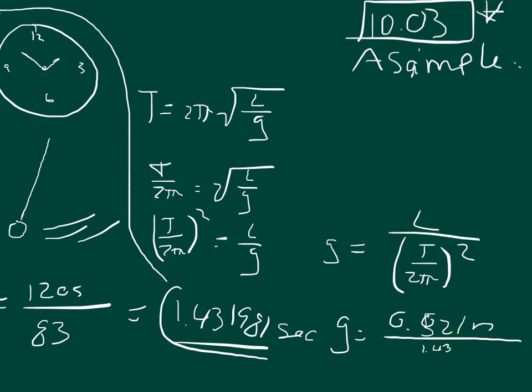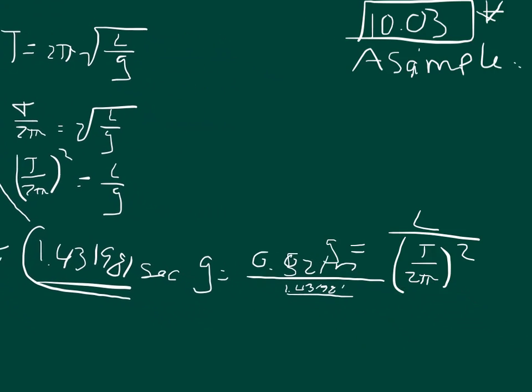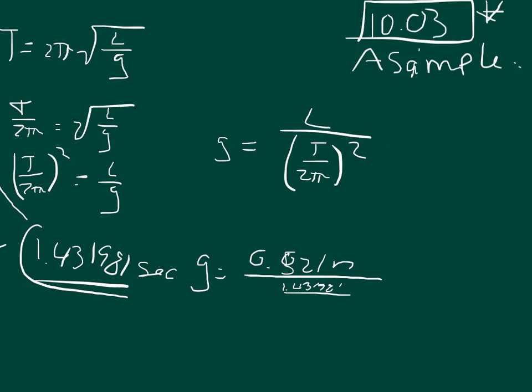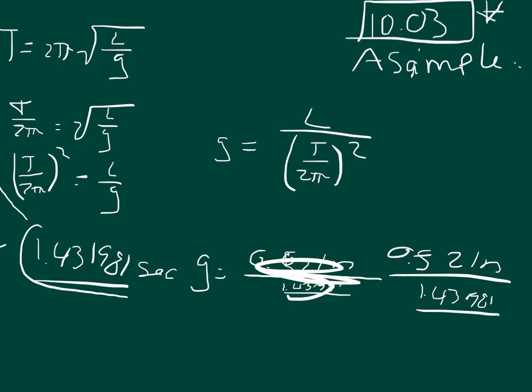So 1.431981 over, let me see if I can move this up some. So actually I'll just try to make this whole thing a little bit bigger. We'll just scratch this out. So 0.521 meters divided by 1.431981 over 2π. So that's approximately 6.283. And we want to take that quantity and square it.